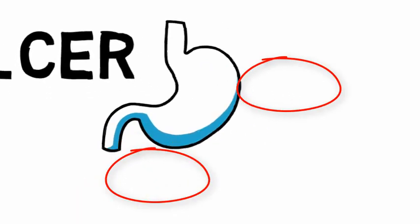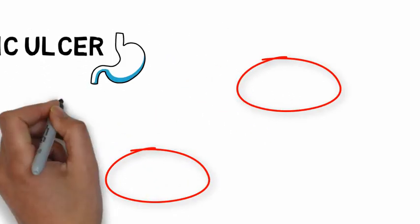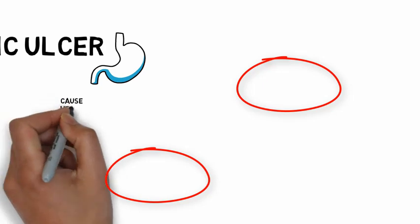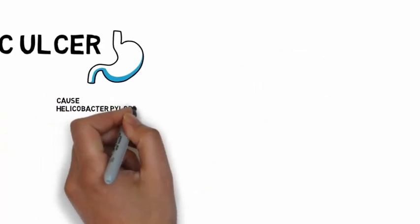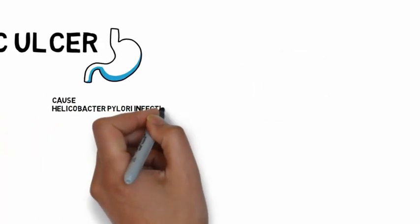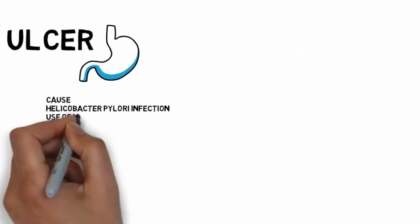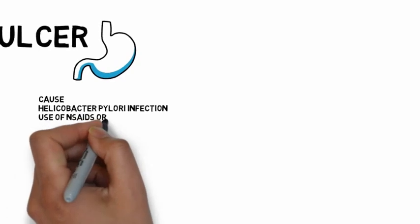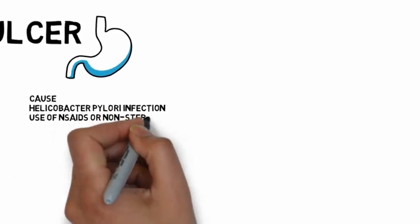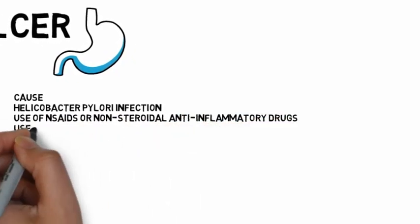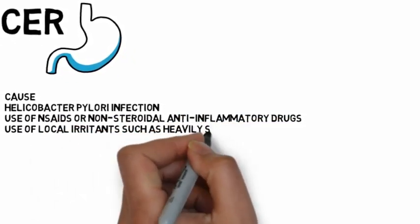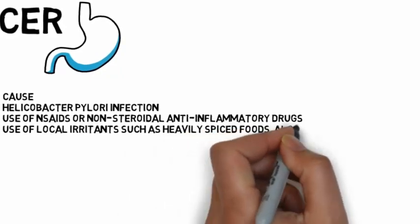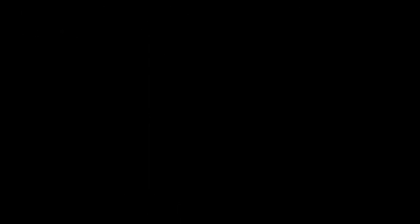The causes of peptic ulcer include stress, Helicobacter pylori infection, use of NSAIDs or non-steroidal anti-inflammatory drugs, and use of local irritants such as heavily spiced foods, alcohol and cigarette smoking.